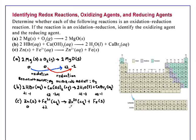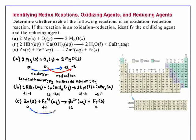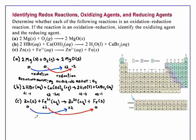Similarly, the zinc ion has a charge of plus two, so its oxidation number is plus two. The iron on the right-hand side is uncombined and has an oxidation number of zero. So zinc is undergoing an oxidation number change from zero to plus two, and iron is undergoing a change from plus two to zero.